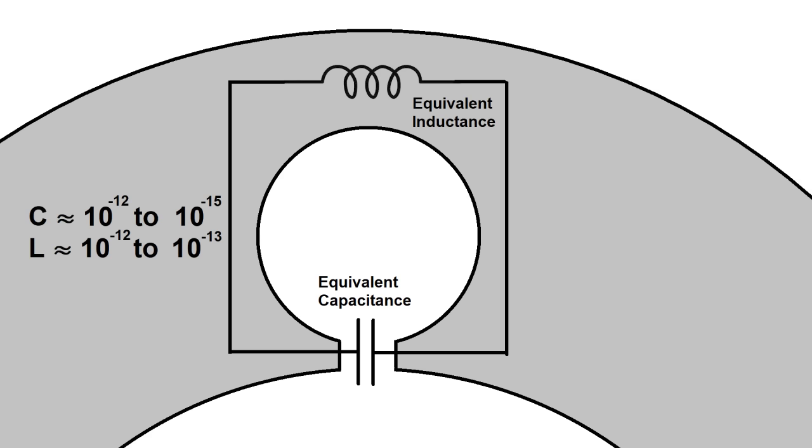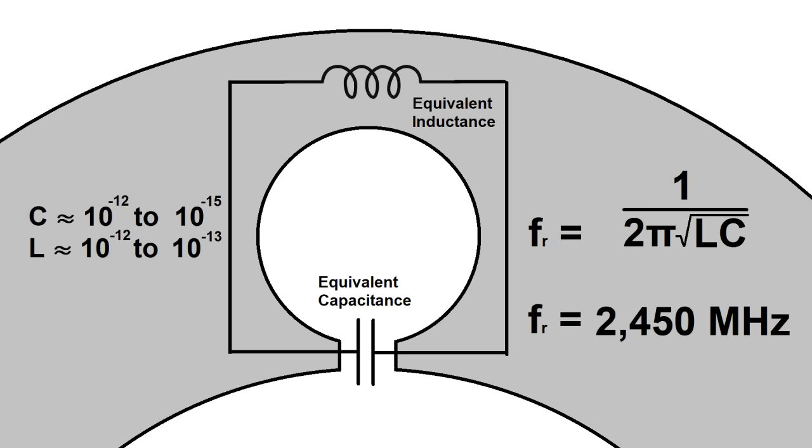Of course, both the capacitance and inductance are extremely small, on the order of picofarads and picohenries depending on the cavity geometry. Nevertheless, it still has a resonant frequency, and in the case of a microwave oven, it's about 2.45 GHz. Okay, so that's how a magnetron works.